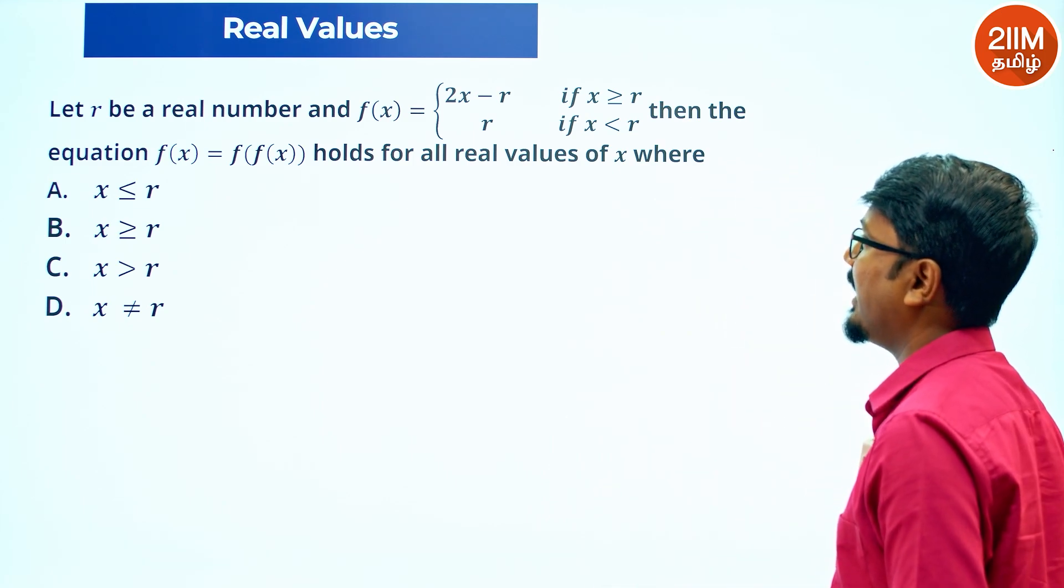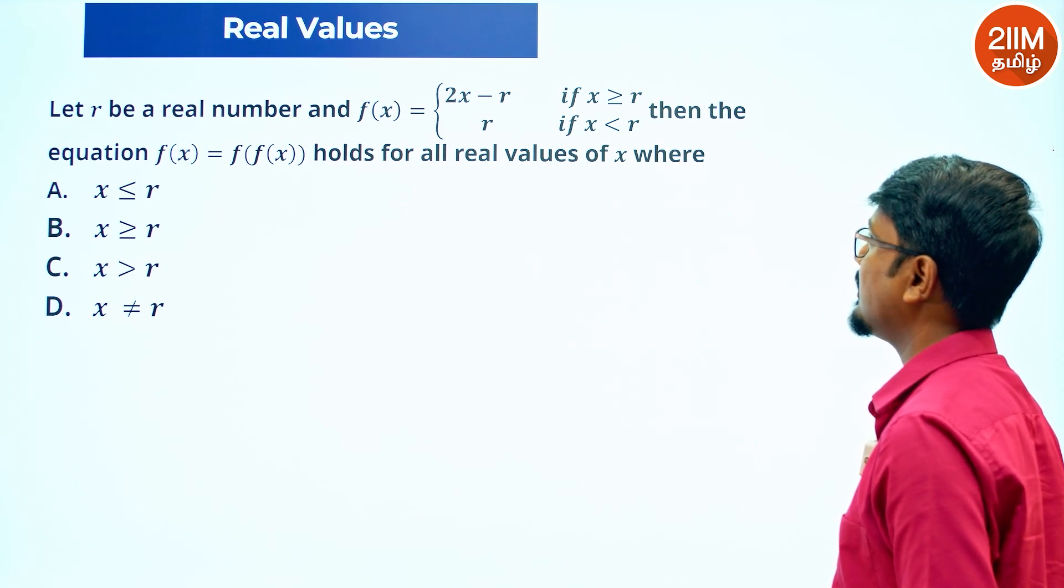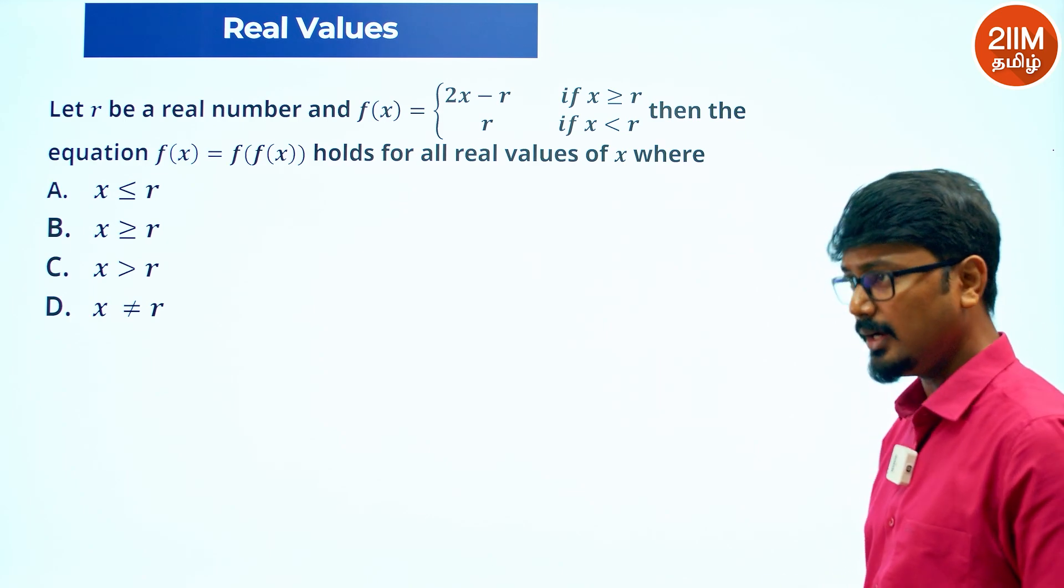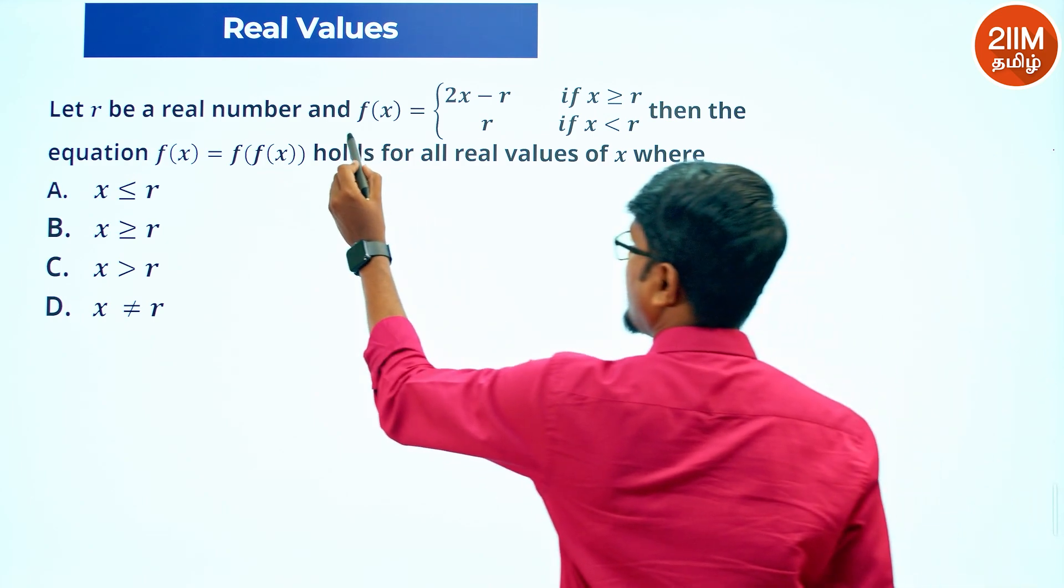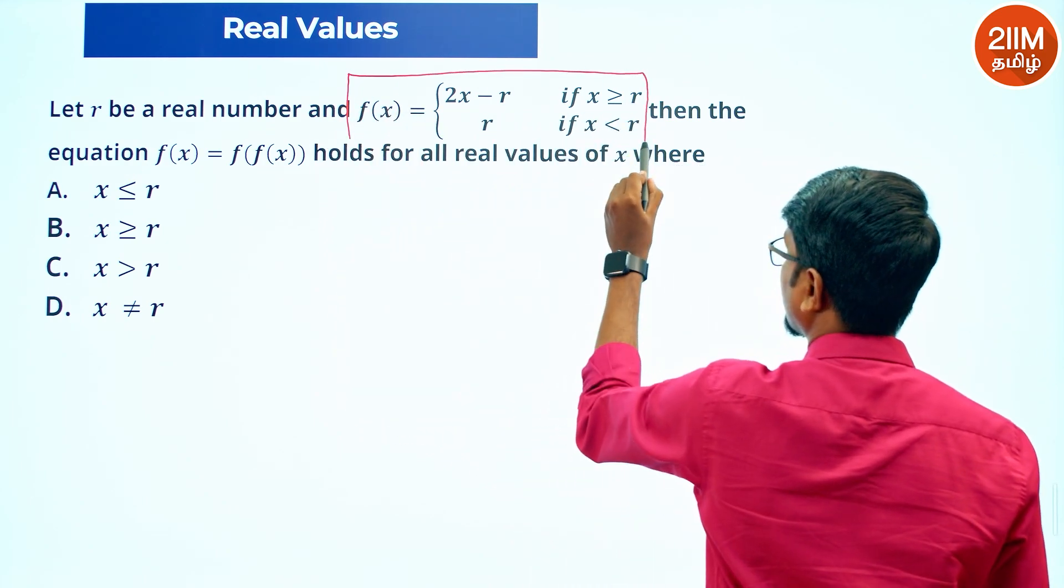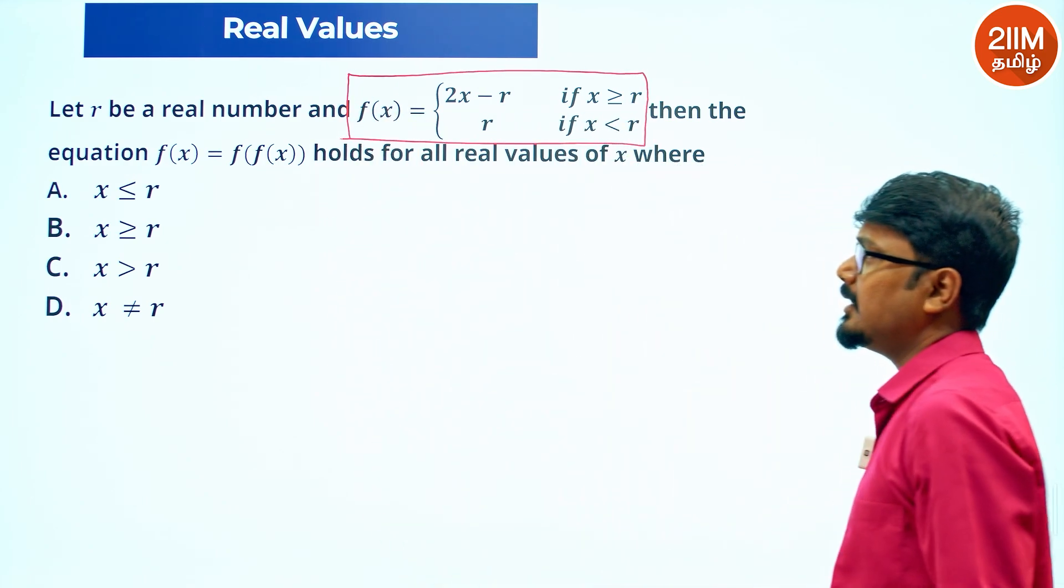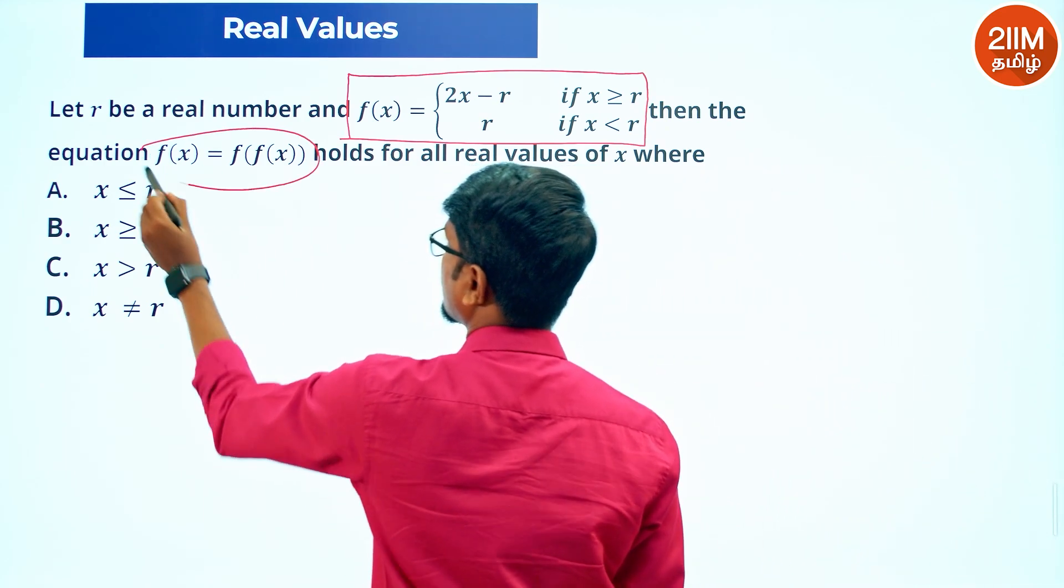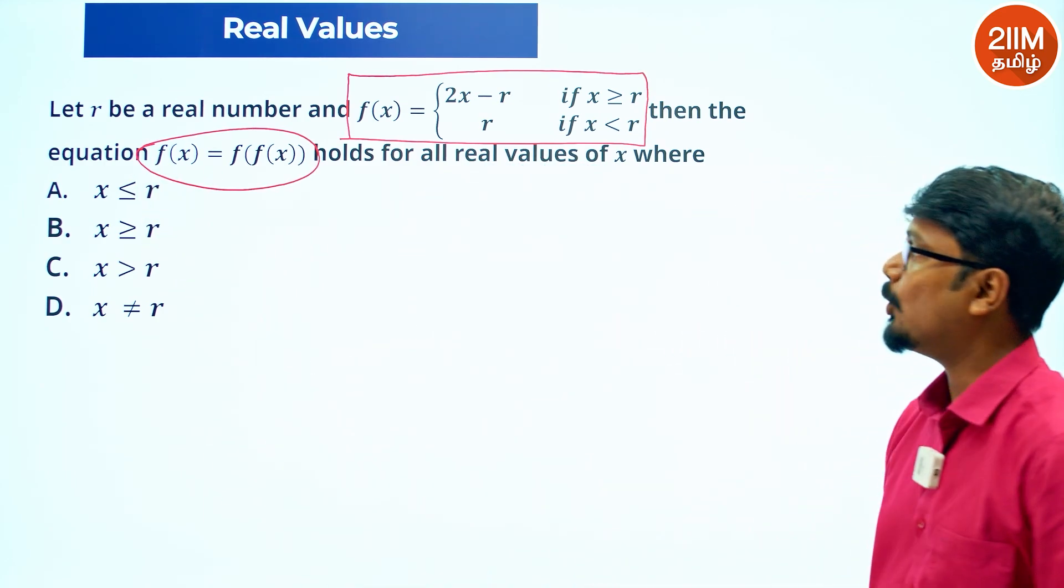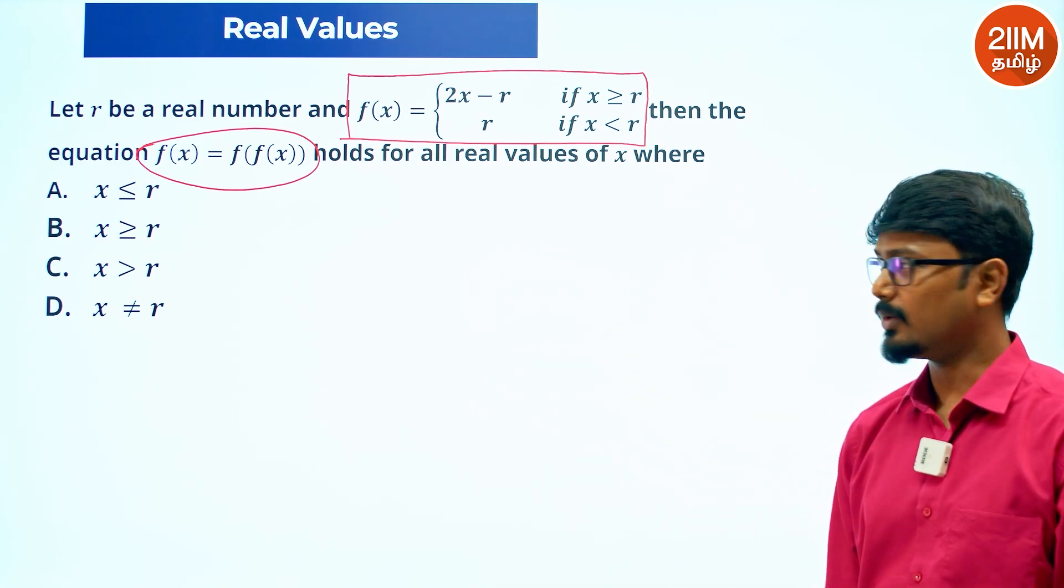Let r be a real number and f of x is equal to 2x minus r if x is more than or equal to r, or r if x is less than r. Then the equation f of x equals f of f of x holds good for all the real values of x where x would range. We need to find the set of values.